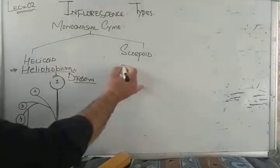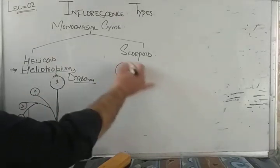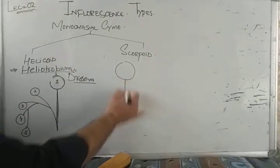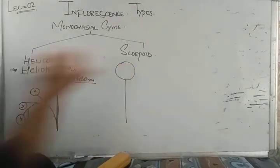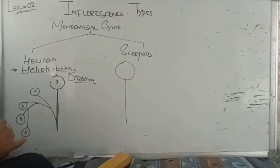Now the second type is scorpioid. Again in scorpioid monochasial cyme, the main axis terminates into a flower — the first flower arises, and then lateral branches also terminate into flowers.